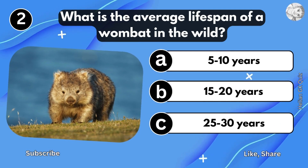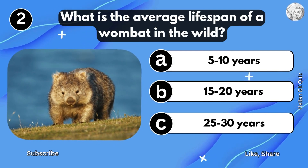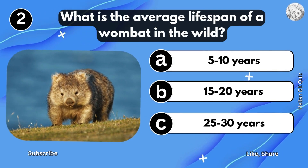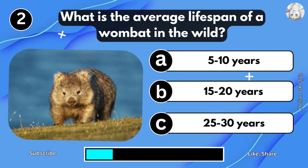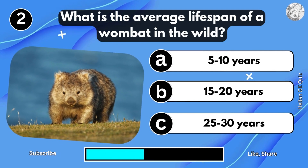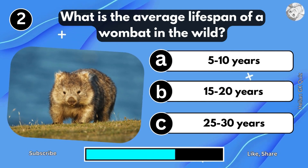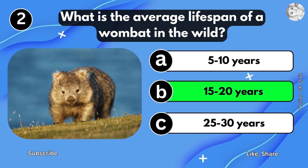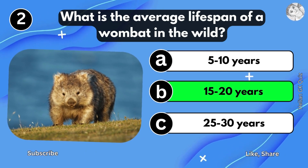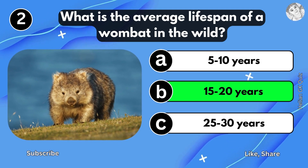What is the average lifespan of a Wombat in the wild? 15 to 20 years.